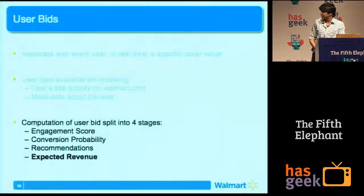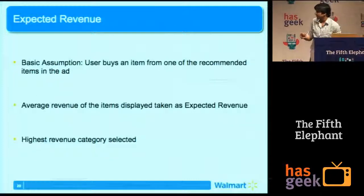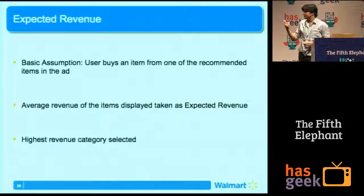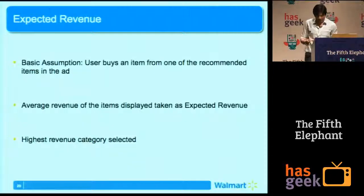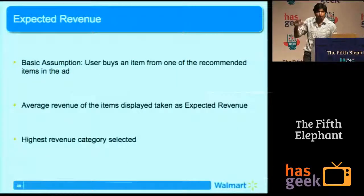The final part is expected revenue. We assume that the items we've shown in an ad are items he's most likely going to buy. We take the average revenue of these items as the expected revenue — approximately the dollars Walmart.com is going to make. You might raise an eyebrow at this assumption, but our logic is: if we're showing him ads of TVs, he might not buy one of those exact three TVs, but he might buy something very similar in the same cost range. It gives us a ballpark figure of how many dollars we expect to make.